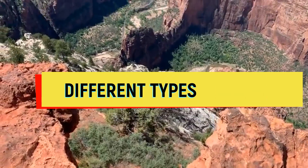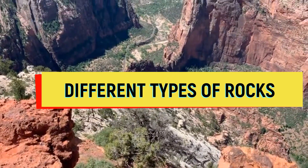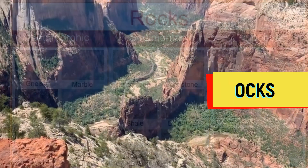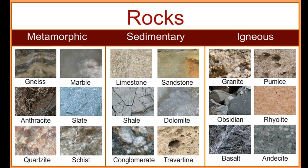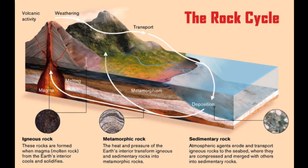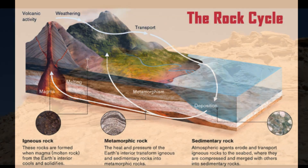What are the different types of rocks and how are they formed? There are three main types of rocks: sedimentary, igneous, and metamorphic rocks, which are formed by physical changes like cooling, eroding, compacting, or deforming — which is a part of the rock cycle.